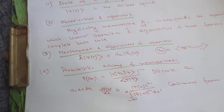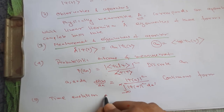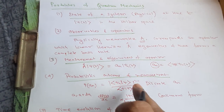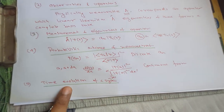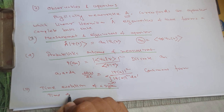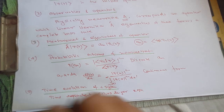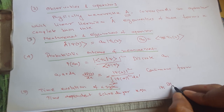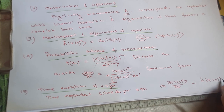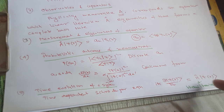The fifth and last postulate is the time evolution of a system. The previous four postulates describe a system at a particular time t. The fifth postulate is represented by the time-dependent Schrödinger equation: iℏ ∂ψ(t)/∂t = Ĥψ(t), where Ĥ is called the Hamiltonian, which is the total energy operator of the system.